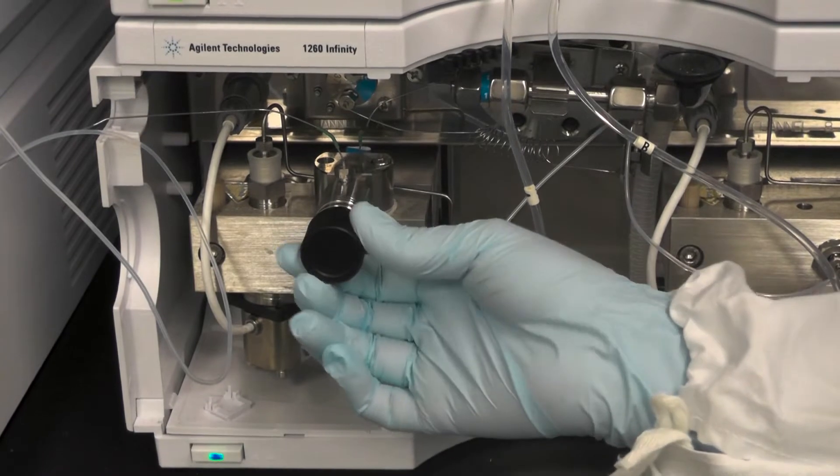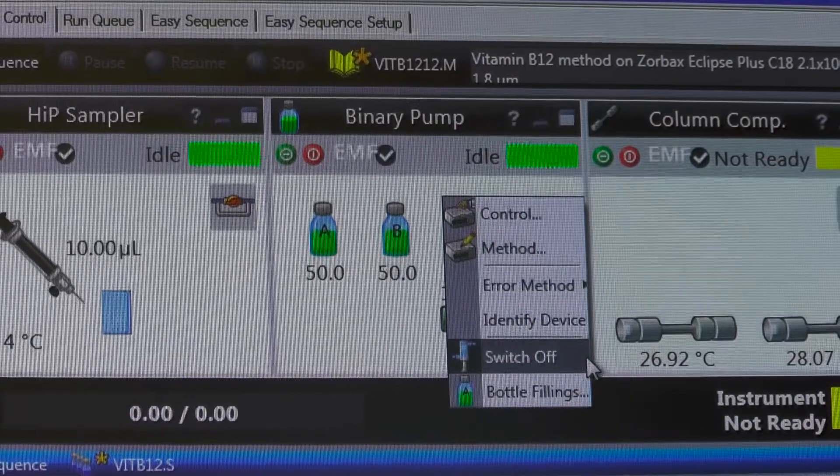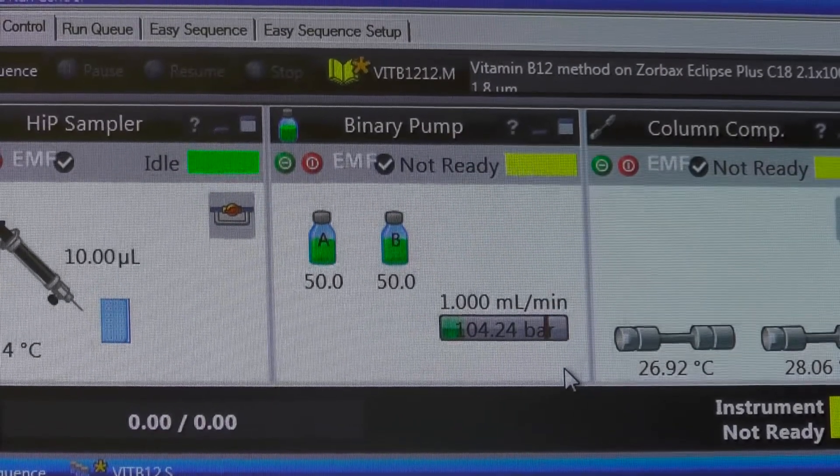When the purging is complete, gently close the purge valve and switch off the binary pump. The initial purge should be done once per day.